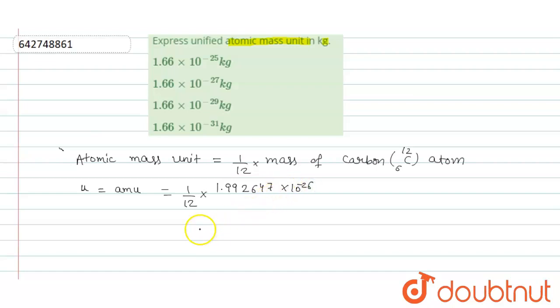So after calculating these two terms it will get 1.66 into 10 raise to power minus 27 kg. So we can say that one atomic mass unit is equal to 1.66 into 10 raise to power minus 27 kg. Therefore option B is correct.